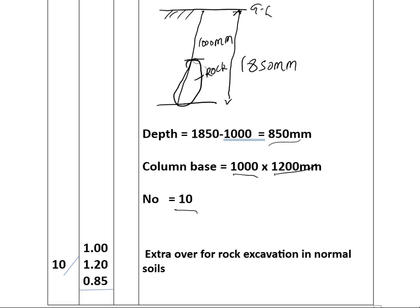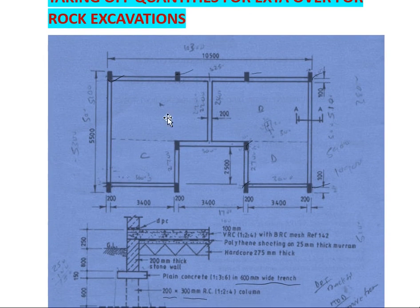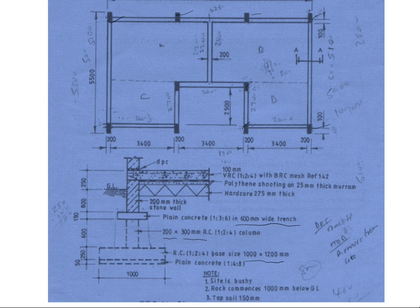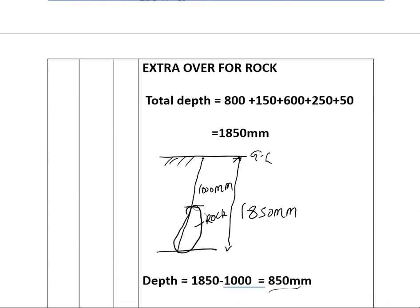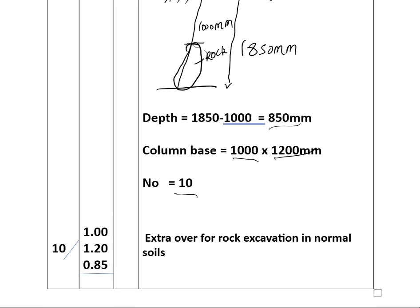We multiply by 10 because rock is occurring in each and every column — we found that the depth exceeds the depth of the strip foundation, so the extra over for rock is on the columns. We multiply by the number of columns, which is 10, and then we describe it as extra over for rock excavation in normal strength.